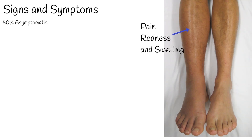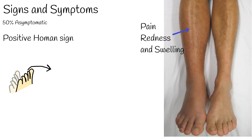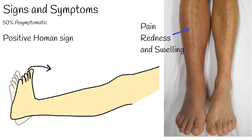Swelling of the leg can be one-sided or in both legs, depending on which vein is affected. A positive Homan's Sign means pain or tenderness of the calf.